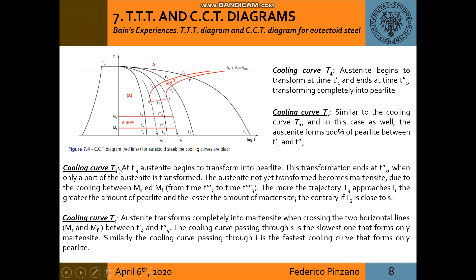For cooling curve T3, at T3 first, austenite begins to transform into pearlite. This transformation ends at T3 second, when only a part of austenite is transformed. The austenite not yet transformed becomes martensite due to the cooling between MS and MF.